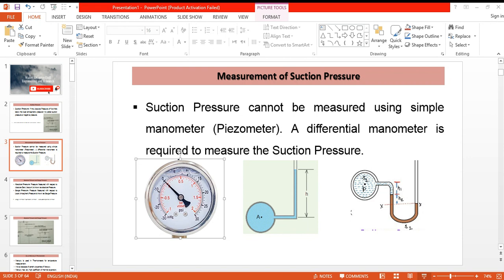Similarly, a simple piezometer or simple manometer having a single limb will not be able to measure the negative pressure because here we can see that only positive pressures can be measured. There is no provision for measuring negative pressure. So a differential manometer or a U-tube manometer will be required to measure the suction pressure.